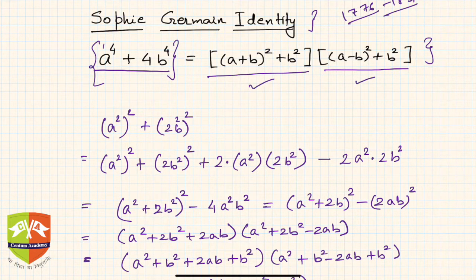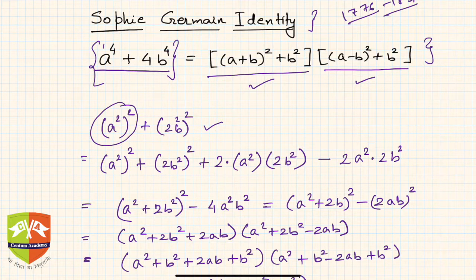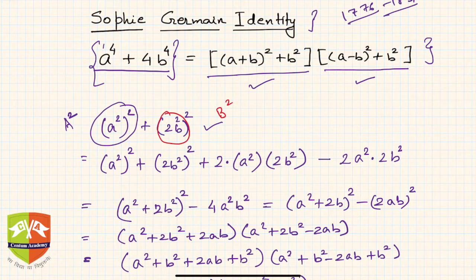Let us see how it is derived. a to the power 4 plus 4 times b to the power 4 can be written as (a squared) squared plus (2b squared) whole squared. Now, this resembles an a squared term and this one resembles a b squared term, so a squared plus b squared is there.